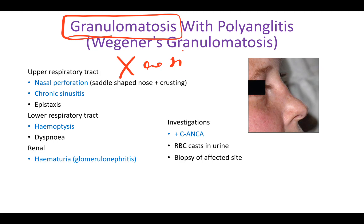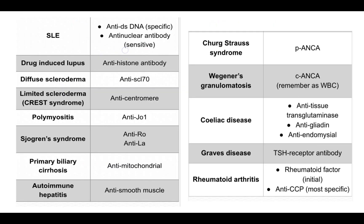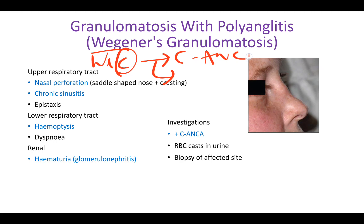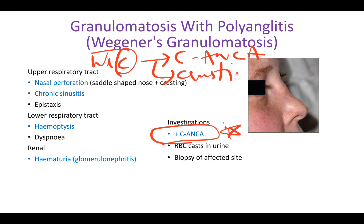To remember Wegener's, just replace the G with C. With this C, we can remember a few things. First, C-ANCA, which is one of the most specific tests for Wegener's granulomatosis.